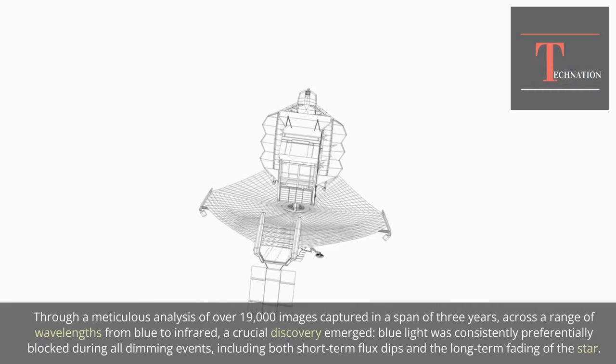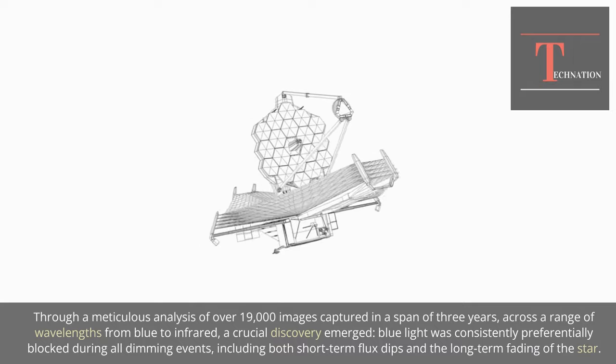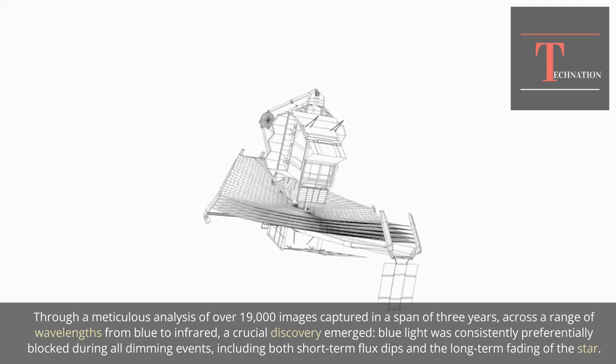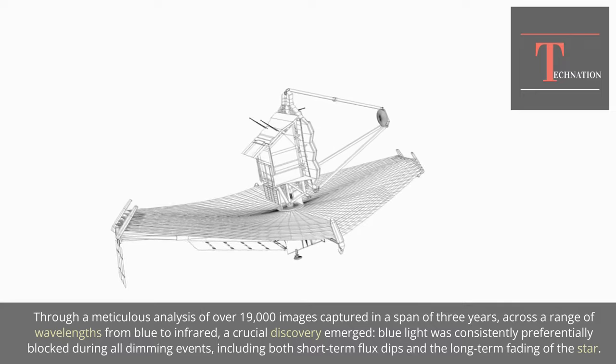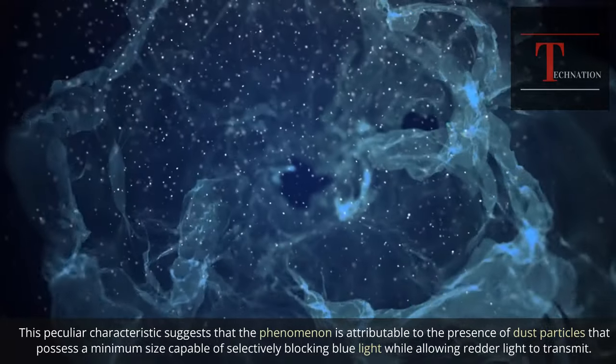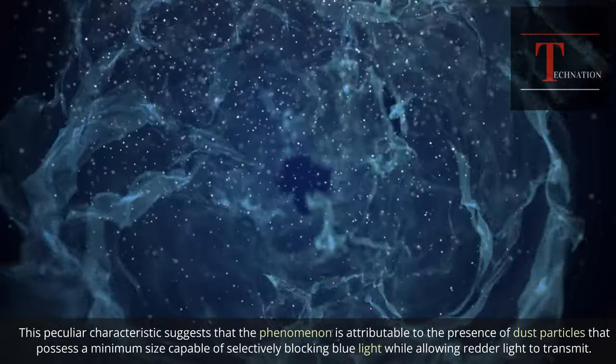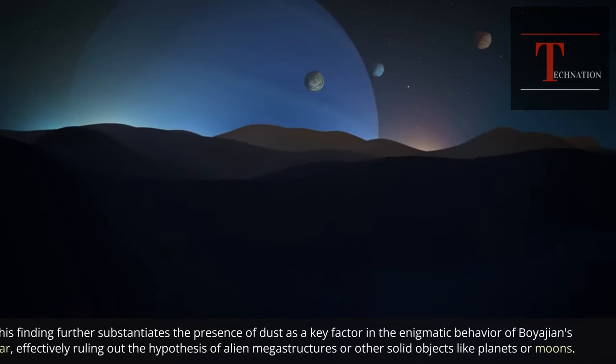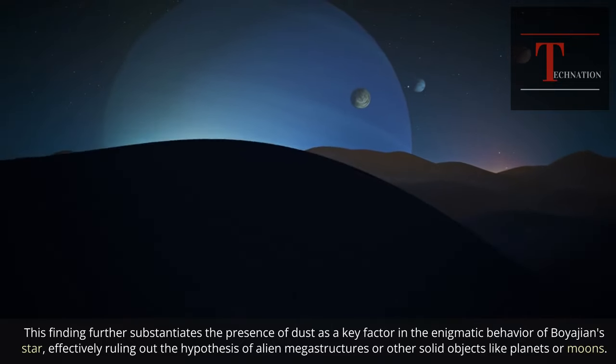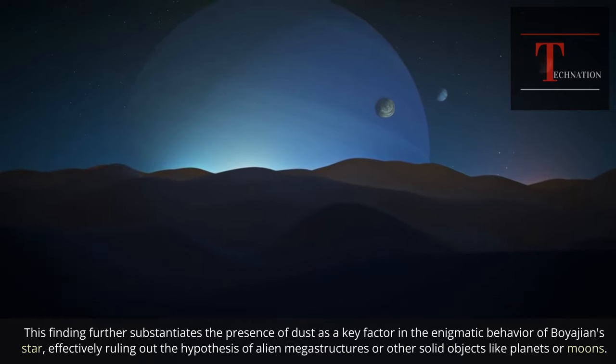Through a meticulous analysis of over 19,000 images captured in a span of three years, across a range of wavelengths from blue to infrared, a crucial discovery emerged. Blue light was consistently preferentially blocked during all dimming events, including both short-term flux dips and the long-term fading of the star. This peculiar characteristic suggests that the phenomenon is attributable to the presence of dust particles that possess a minimum size capable of selectively blocking blue light while allowing redder light to transmit. This finding further substantiates the presence of dust as a key factor in the enigmatic behavior of Boyajian star, effectively ruling out the hypothesis of alien megastructures or other solid objects like planets or moons.